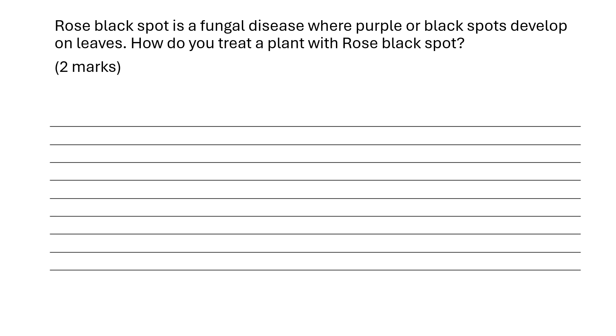This is a GCSE biology question about disease. Rose black spot is a fungal disease where purple and black spots develop on leaves. How do you treat a plant with rose black spot?